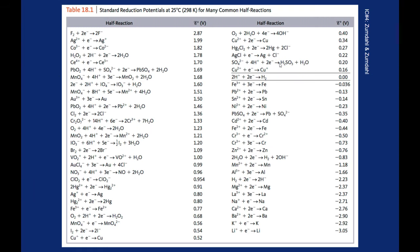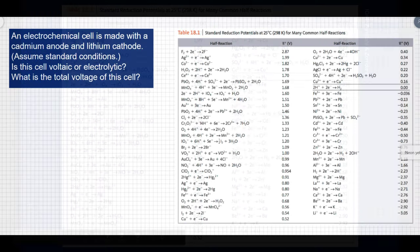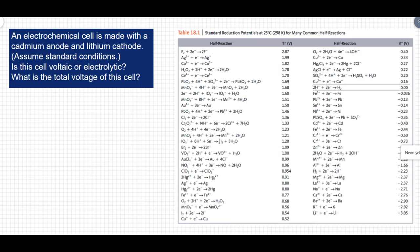Once again we'll be relying on the standard reduction potentials found in the text. So let's find lithium and cadmium on our standard reduction potentials. Lithium is right down at the bottom. It is the worst at reducing, which means it's really good at oxidizing.